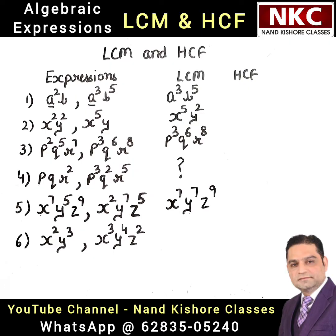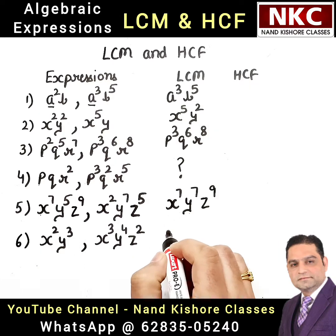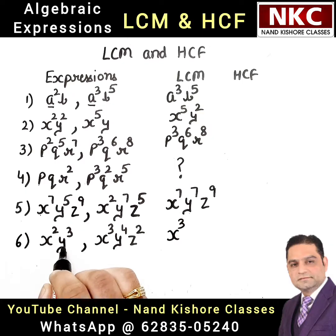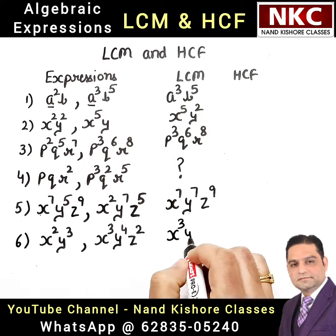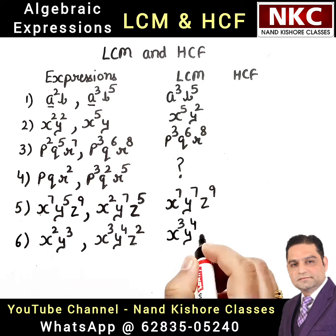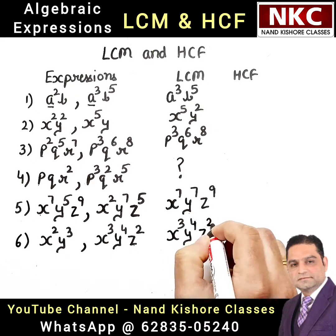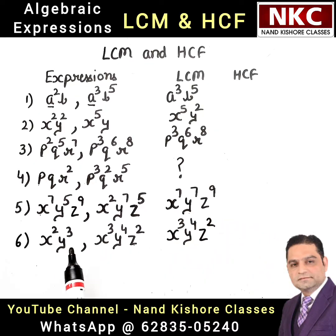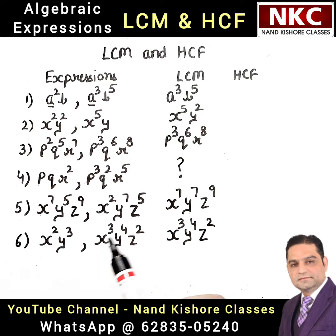Now the last part has a difference — please check it very carefully. X square and X cube: highest value is X power 3. Y power 3 and Y power 4: highest is Y power 4. Z square appears only in the second term but is not available in the first. Still, we will write it in the LCM. If any variable is present in only one expression, we still take it with the same exponent. Please keep a note of this special point.